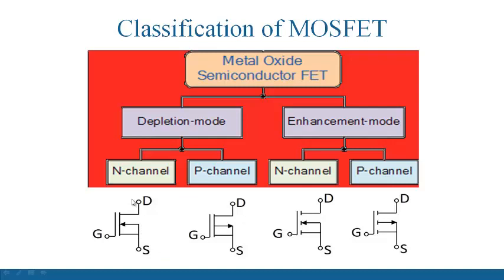When you see MOSFET — Metal Oxide Semiconductor — one side you will have metal, in between you have oxide, then you have semiconductor material. The metal is nothing but your gate terminal. Then oxide, which is an isolation between this metal and the semiconductor — that isolation is done by the oxide. That is why in the symbol there is a gap, and that gap is filled with oxide.